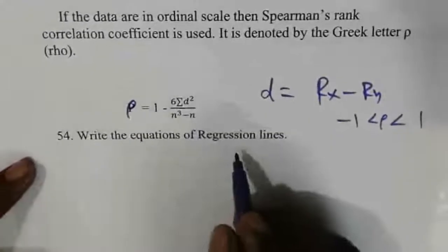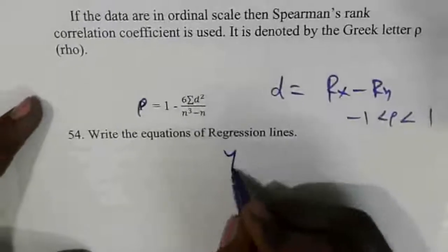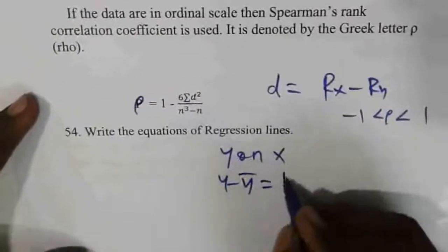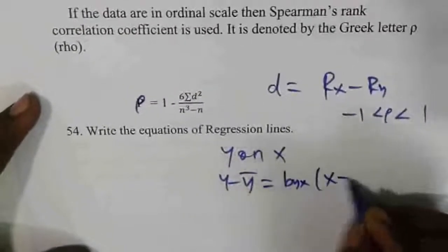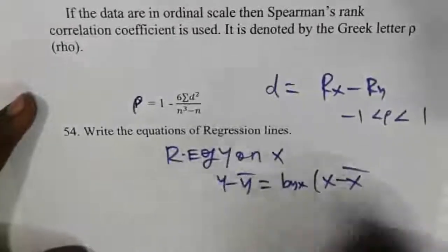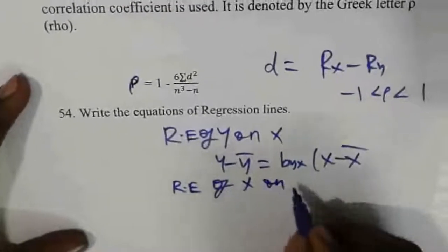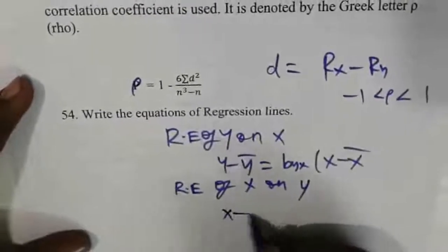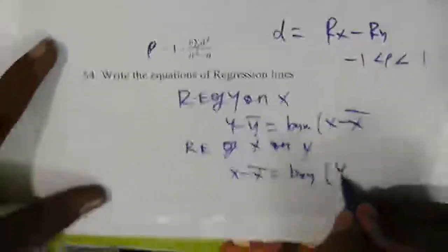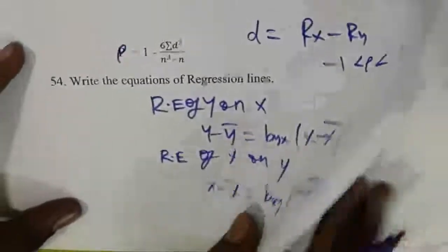Equation of regression lines: the regression equation of Y on X is Y minus Y-bar equals byx multiplied by (X minus X-bar). The regression equation of X on Y is X minus X-bar equals bxy multiplied by (Y minus Y-bar). Write both equations.